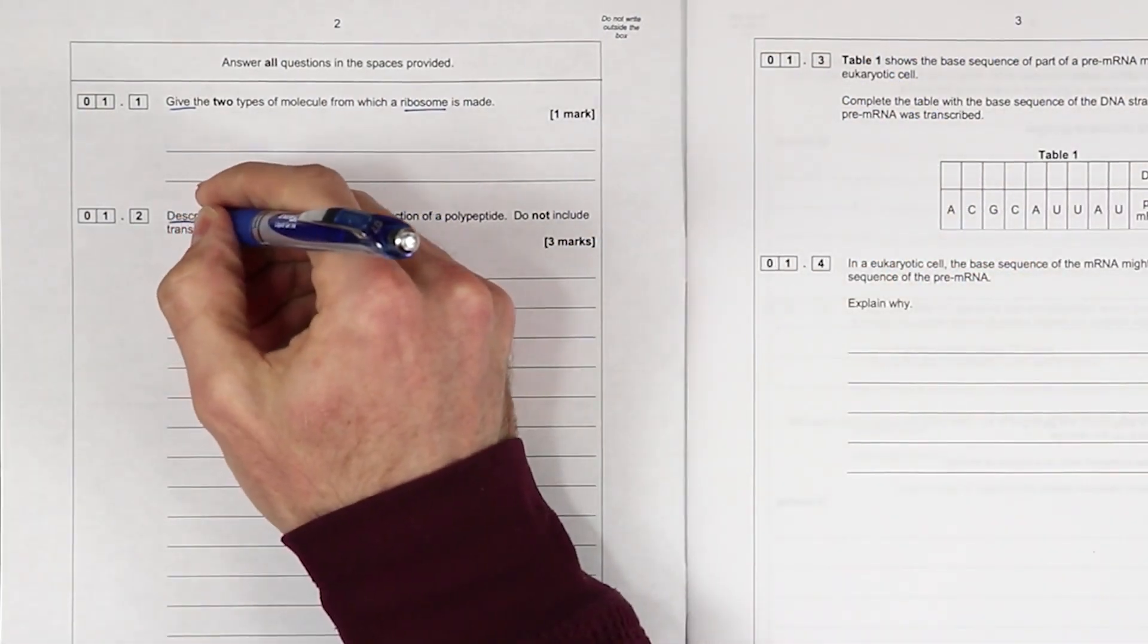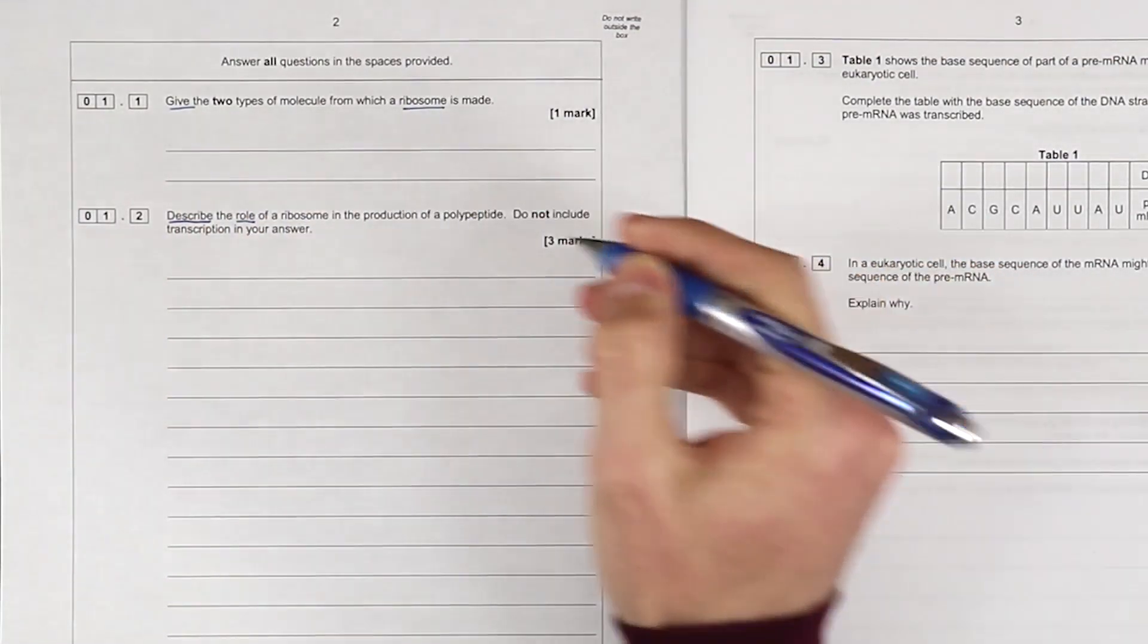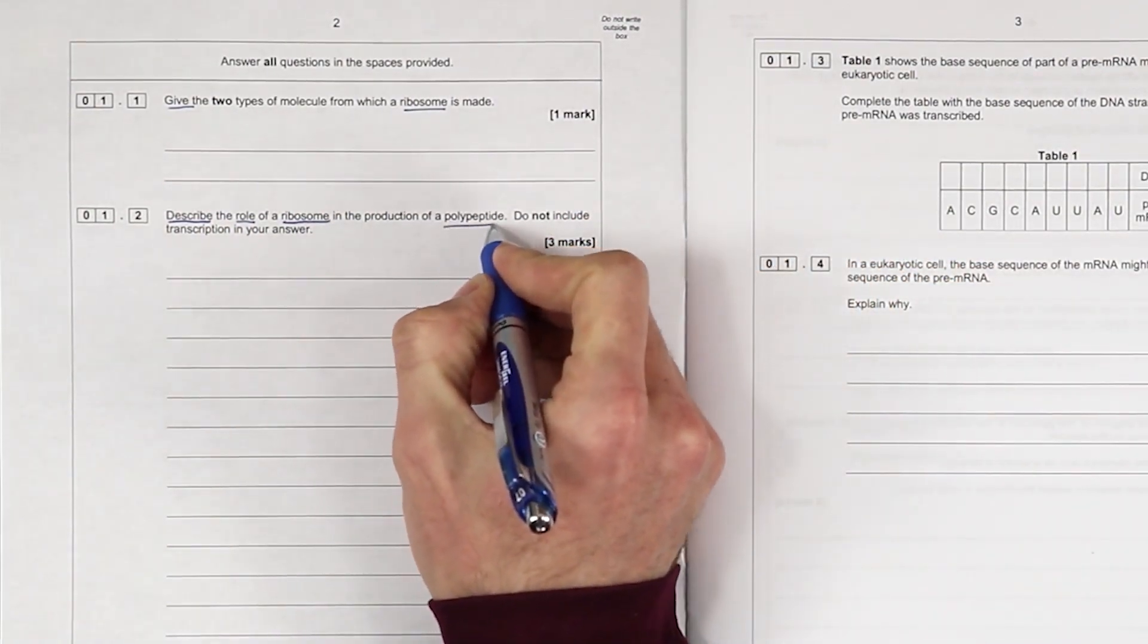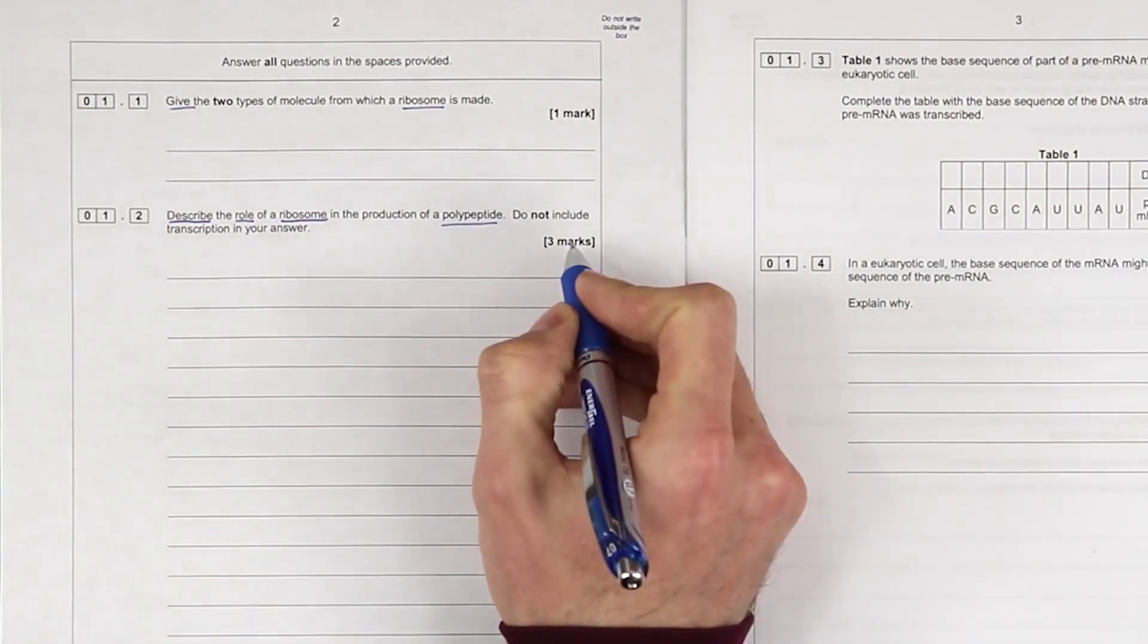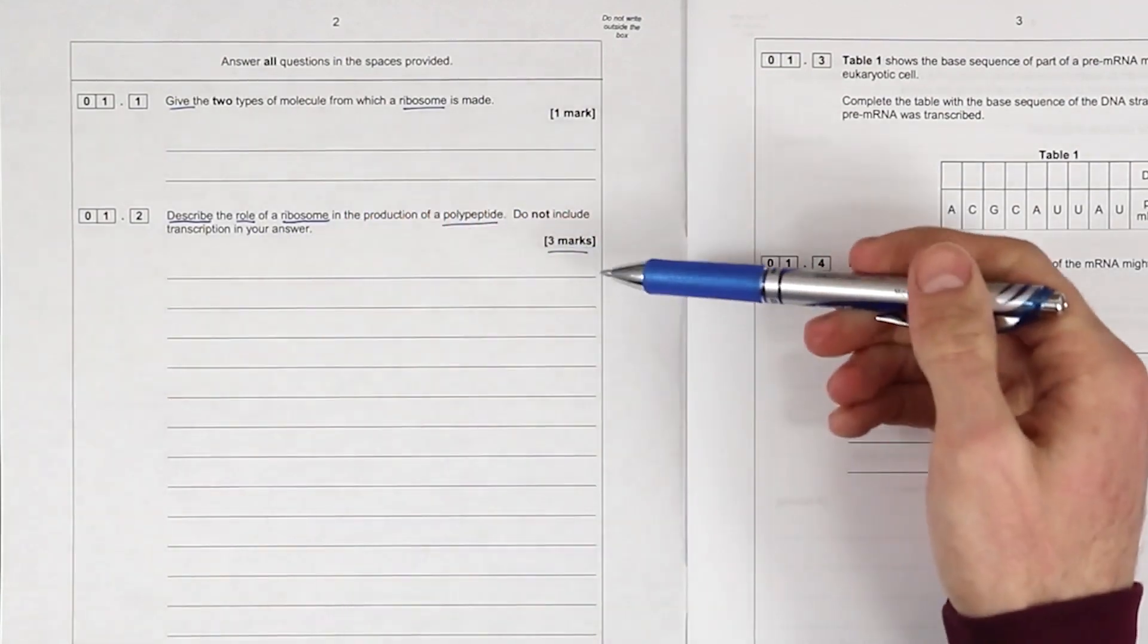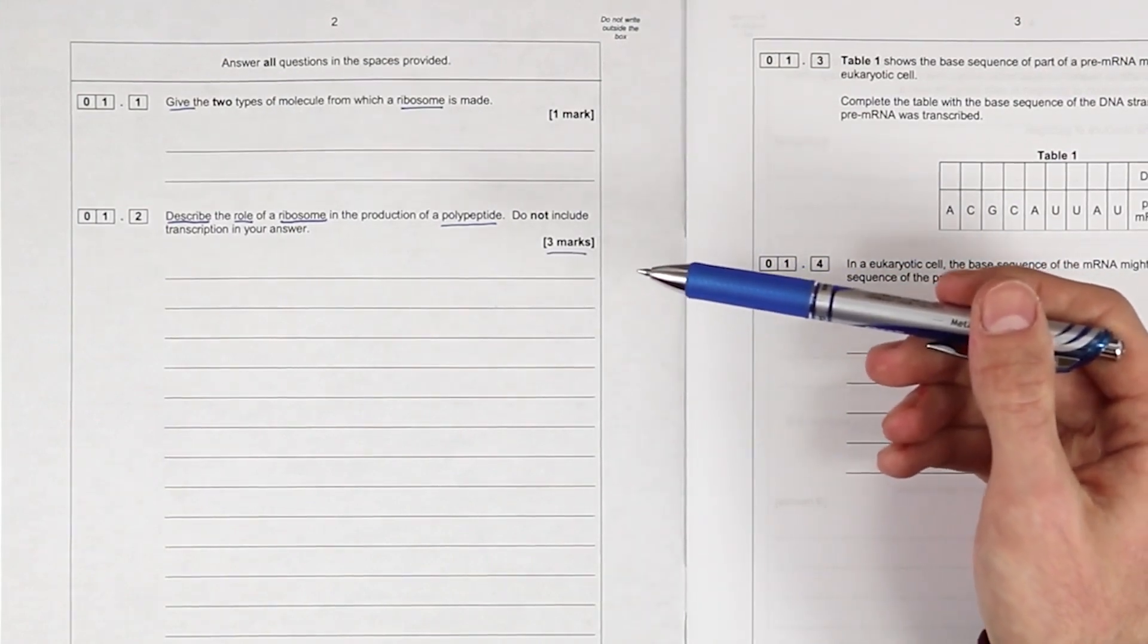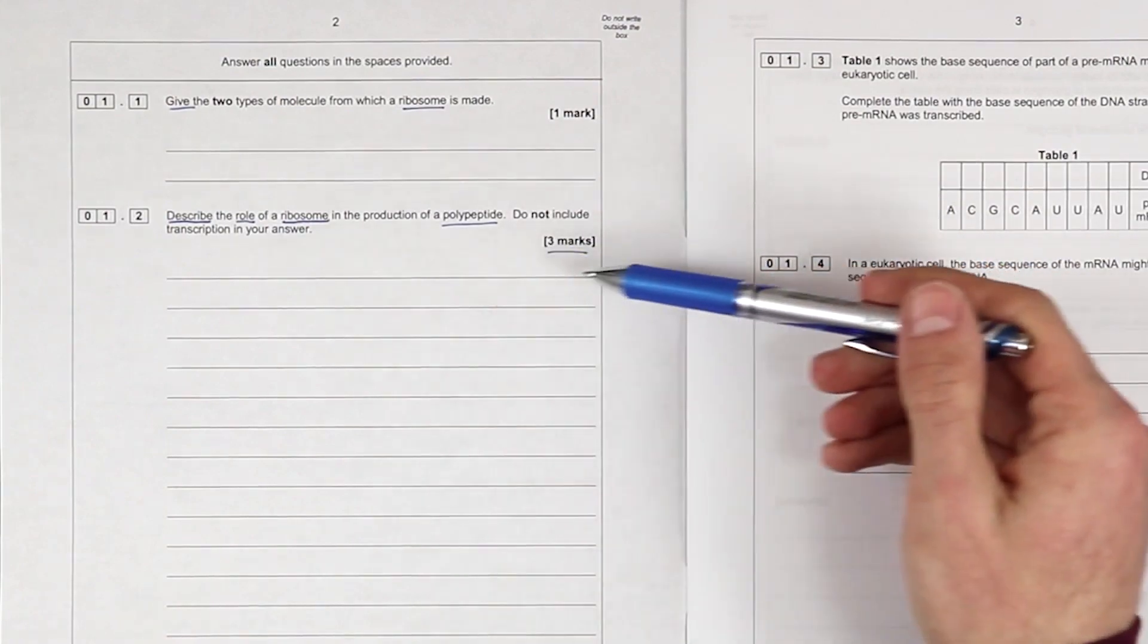Question 1.2: 'Describe' is our command word - the role of the ribosome or a ribosome in the production of a polypeptide or a protein. Do not include transcription in your answer. So we've got three factual points. Look at the amount of space. This in theory could be three bullet points: one, two, three. One of the exercises I'm going to put in the course is to answer past papers with five words per mark. So try and attempt this question with